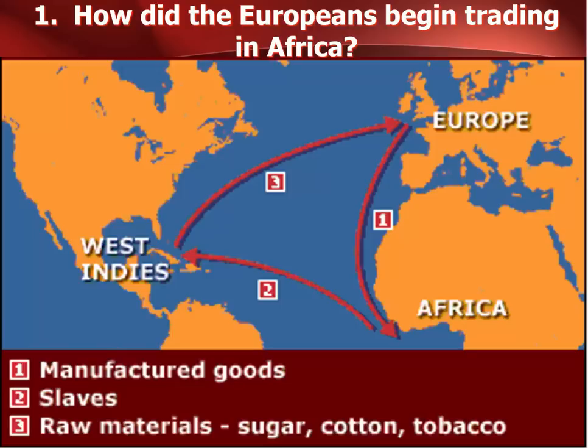The eastern coast of Africa was integrated into Indian Ocean trade by Muslim and Arab traders. Things being exported from Africa during the Indian Ocean trade period included gold, slaves, ivory, and amber. So there was a slave trade present in Africa prior to the Europeans.